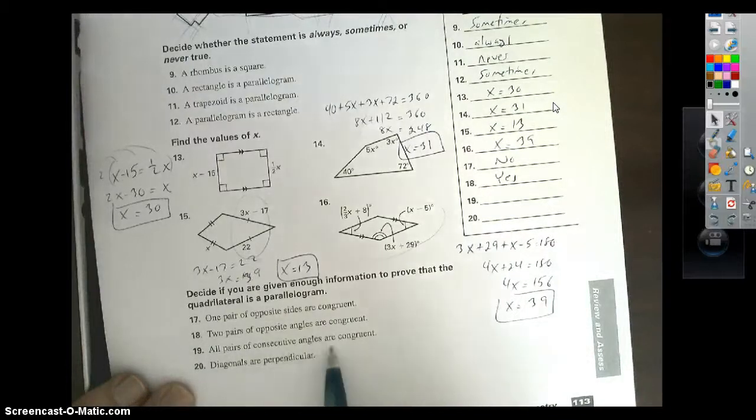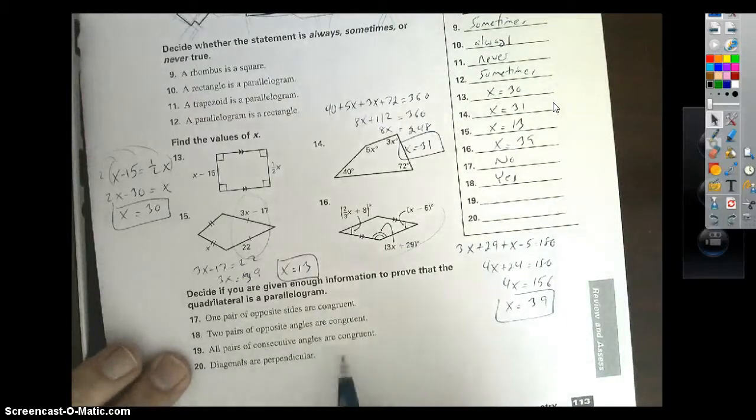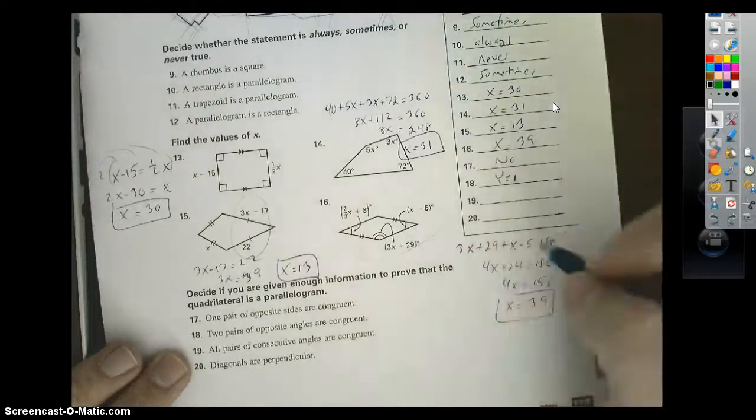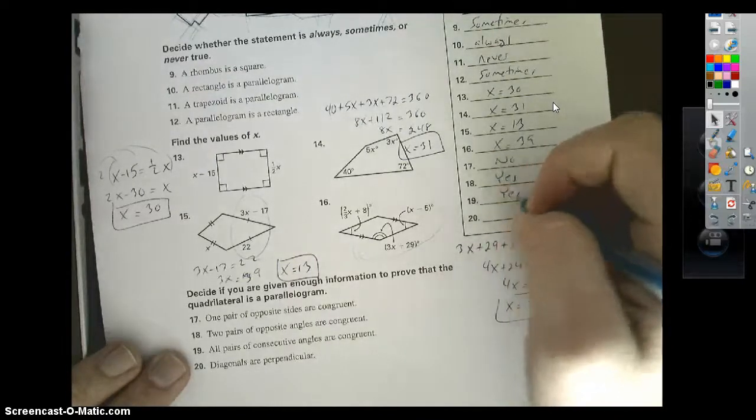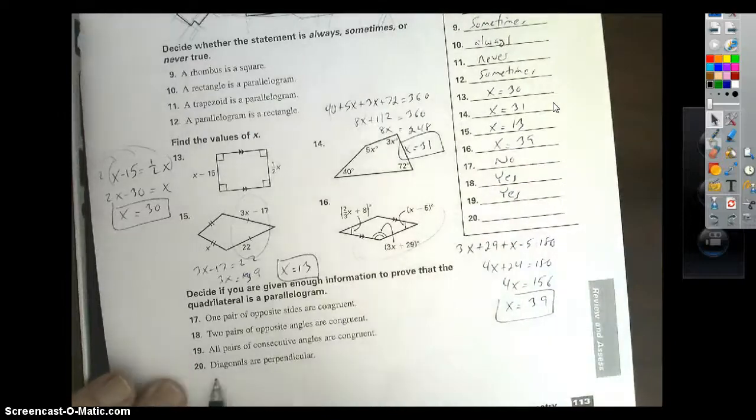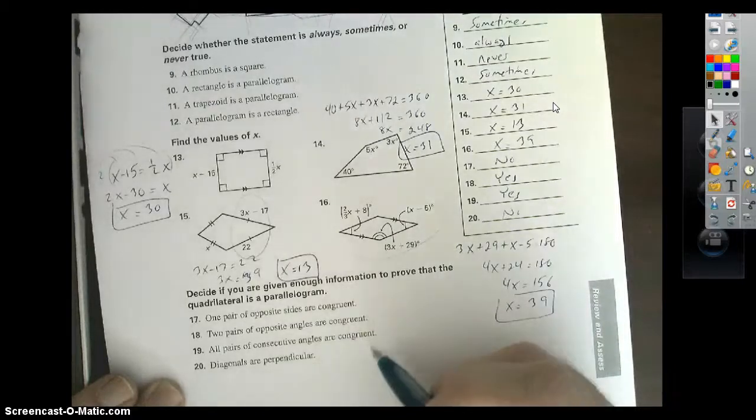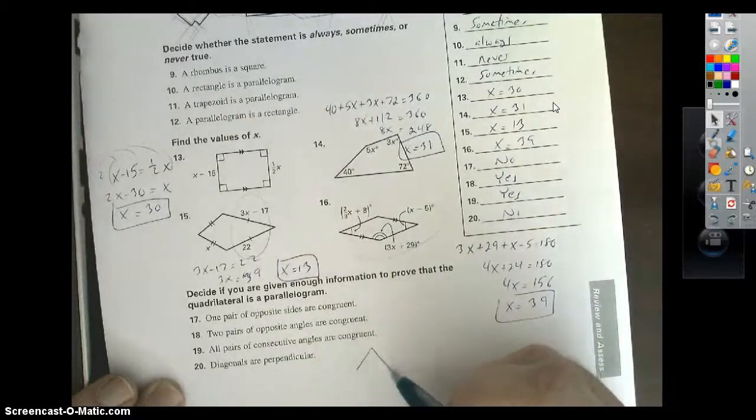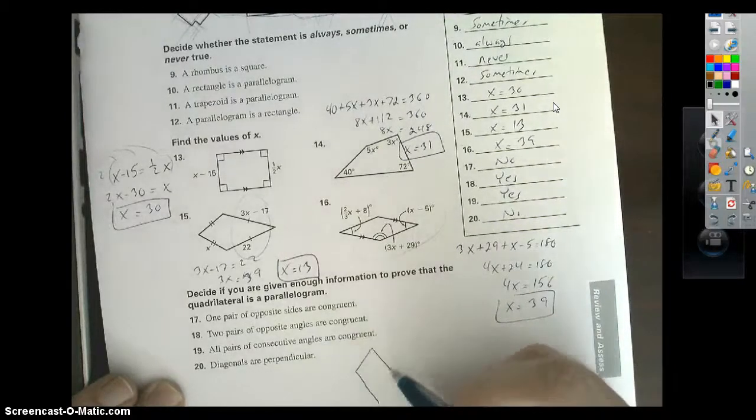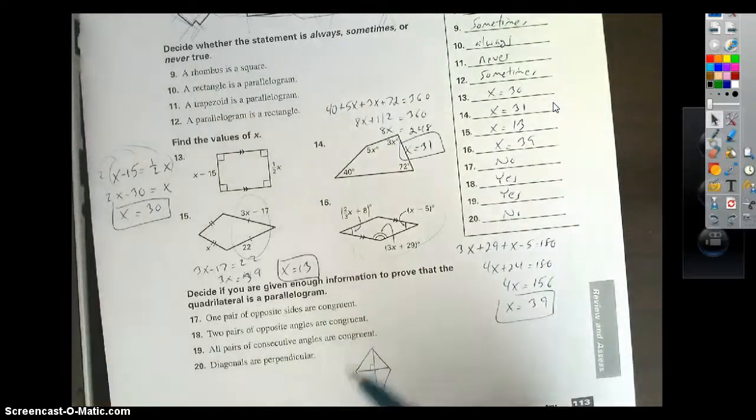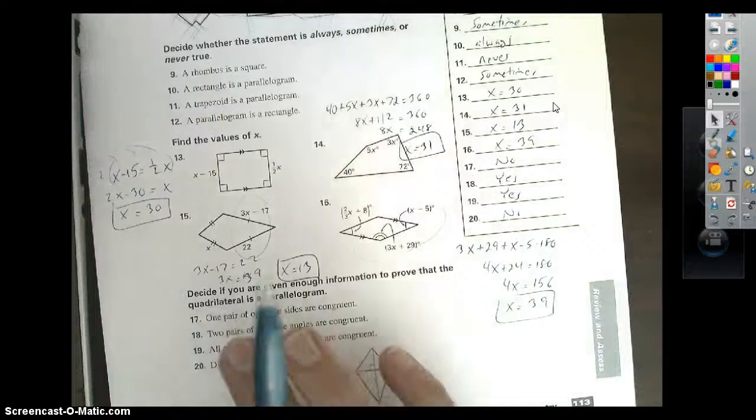All pairs of consecutive angles are congruent. This would give us, basically, the only way it could possibly work for a quadrilateral would be a rectangle or a square, which is a part of the parallelogram family, so that'll be a yes. And lastly, diagonals are perpendicular. This one's going to be a no, only because we learned one other shape in class that has this, which is a kite. Kite's got perpendicular diagonals, so it could possibly be a kite as opposed to a parallelogram.